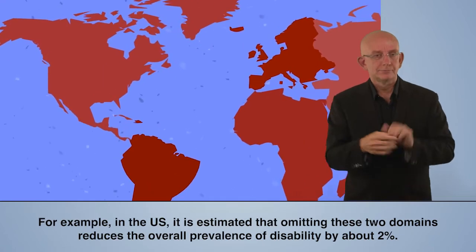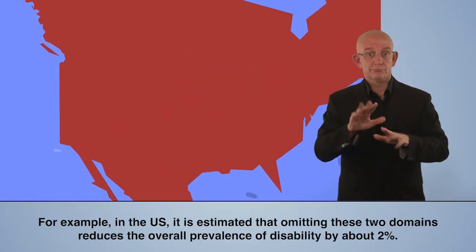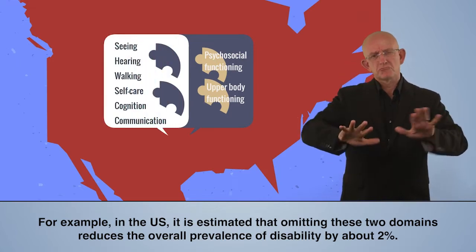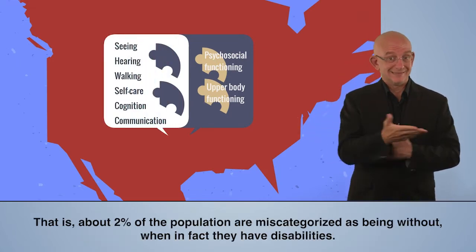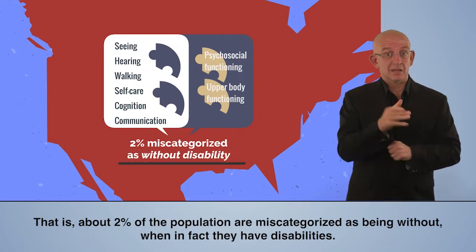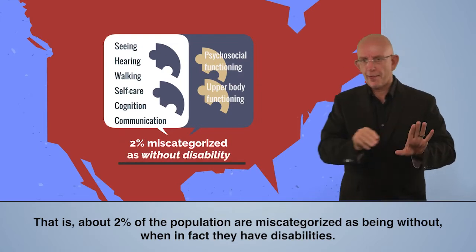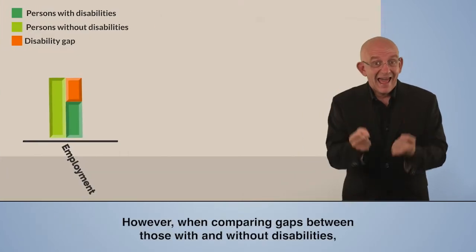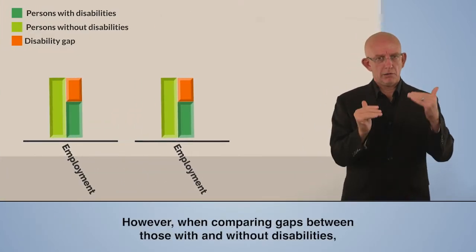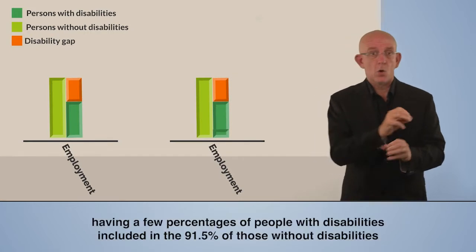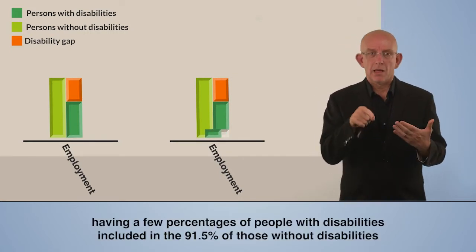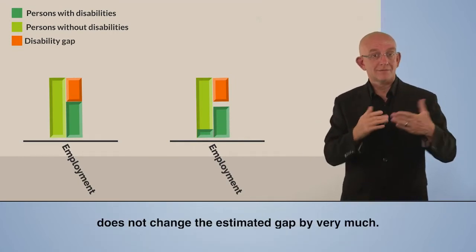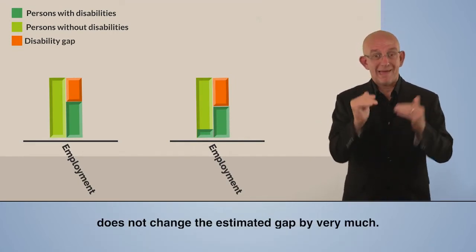For example, in the US, it is estimated that omitting these two domains reduces the overall prevalence of disability by about 2%. That is, about 2% of the population are miscategorized as being without disabilities, when in fact they have disabilities. However, when comparing gaps between those with and without disabilities, having a few percent of people with disabilities included in the 91.5% of those without disabilities does not change the estimated gap by very much.